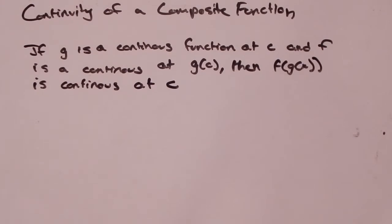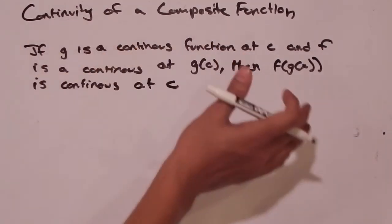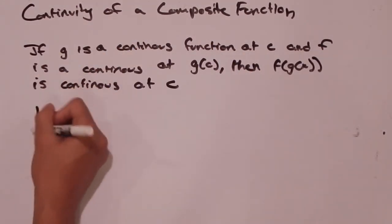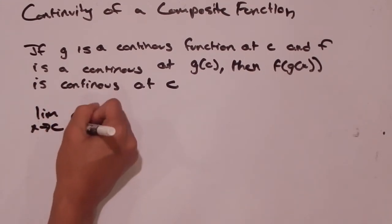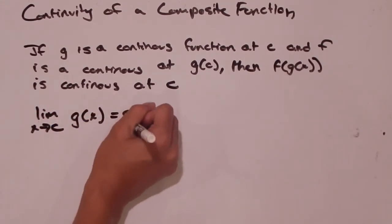How can we do that? Well let's look at what we know. We know g is a continuous function at c, so that lets us know that the limit as x approaches c of g(x) is equal to g(c).